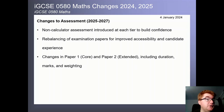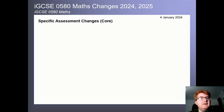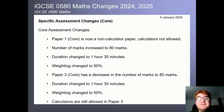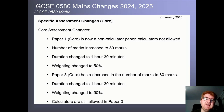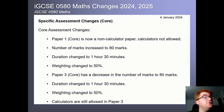The changes affect duration, number of marks, and weighting for papers one, two, three, and four. For core: Paper 1 is now a non-calculator paper, worth 80 marks, lasting one hour and 30 minutes, with a 50% weighting. Paper 3 has been reduced to match — also 80 marks, still calculator-allowed — giving equal weighting between the non-calculator and calculator papers.